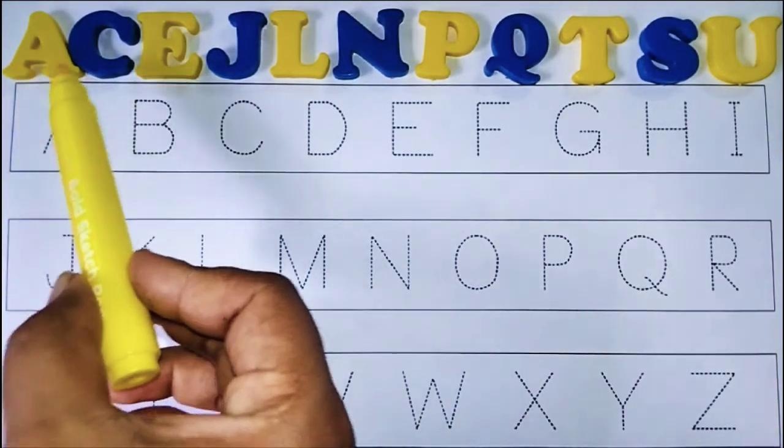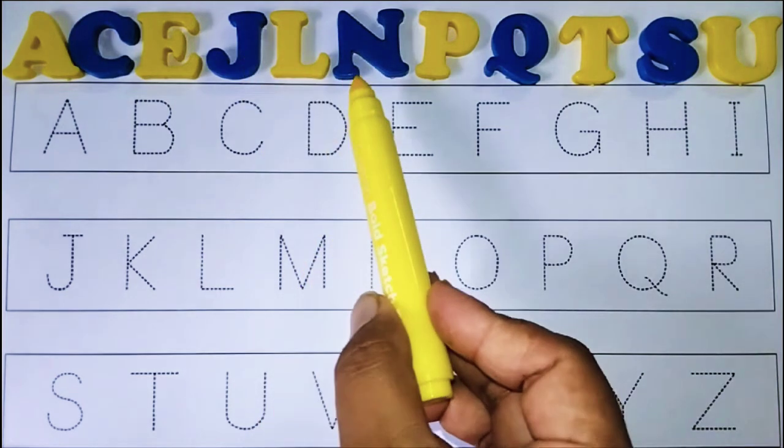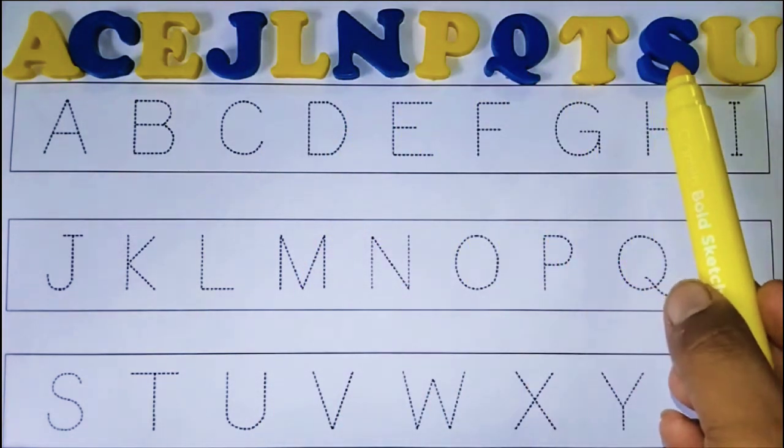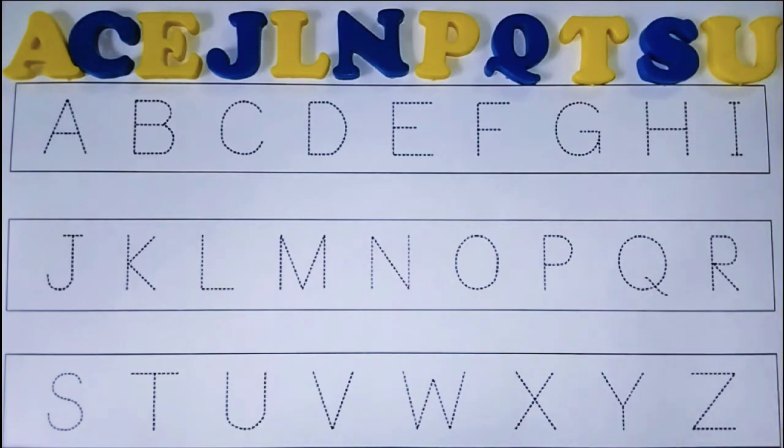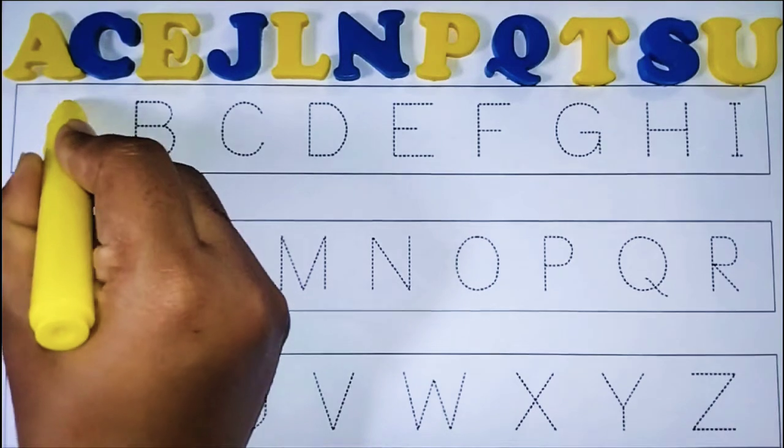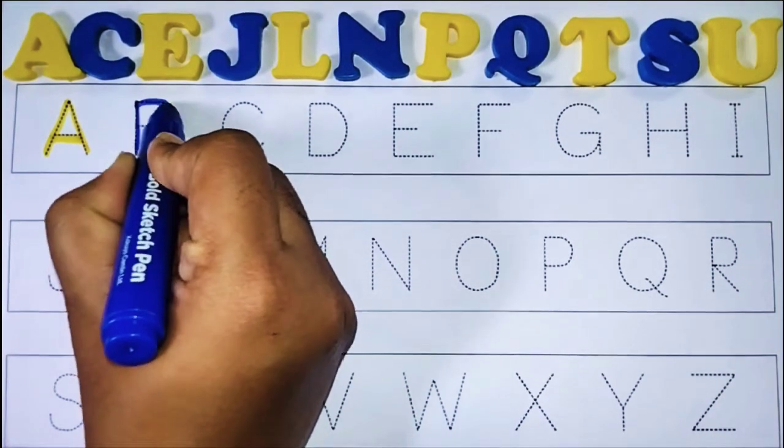E, C, E, J, L, N, P, Q, T, S, U, yellow color. A, A for apple. B, B for bat.